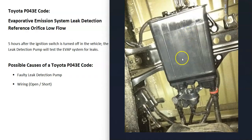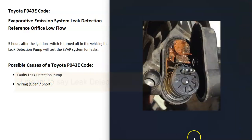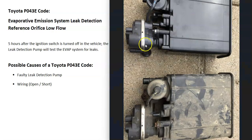The main thing to check with this code is the leak detection pump, which is located on the charcoal canister underneath the vehicle near the gas tank. The onboard computer is seeing an issue with this charcoal canister. It's very common for these to become rusted up or clogged up and just stop working. You can buy the leak detection pump separately from the charcoal canister, or you can buy the whole assembly and replace everything together.